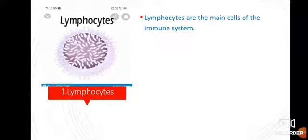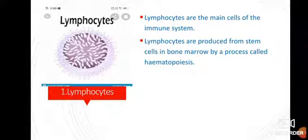Since childhood, we have learned that the cells which protect our body are the white blood cells — we call them soldier cells. Lymphocytes are the main cells of the immune system, meaning they are the soldiers of our disease-resistance system.